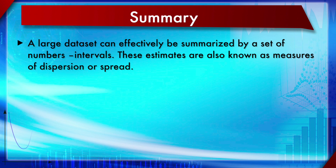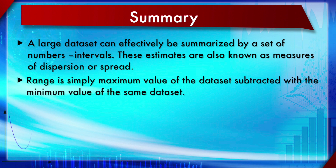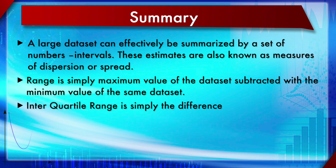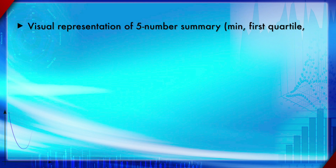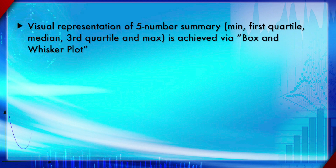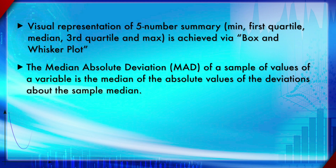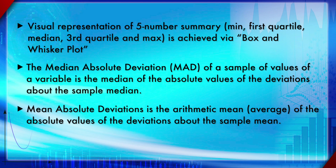In summary, a large data set can effectively be summarized by a set of numbers known as interval estimates, also called measures of dispersion or spread. Range is the maximum minus minimum (exclusive range). Interquartile range is the difference between the 75th and 25th percentiles. The five-number summary — minimum, first quartile, median, third quartile, and maximum — is visualized via the box and whisker plot. Median absolute deviation is the median of the absolute deviations about the sample median; mean absolute deviation is the arithmetic mean of the absolute deviations about the sample mean.